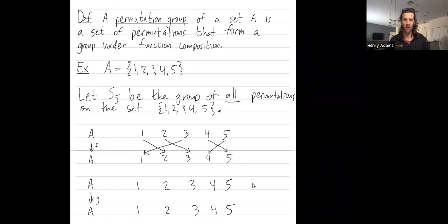So for G, why don't we send 1 to 3? Why don't we send 2 to itself? Why don't we send 3 to 4? How about 4 goes to 1, and 5 goes to itself. So this is G.